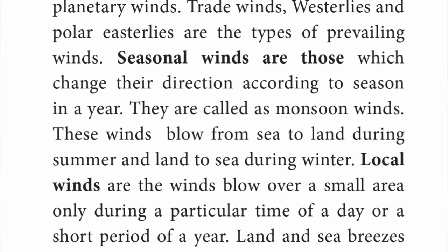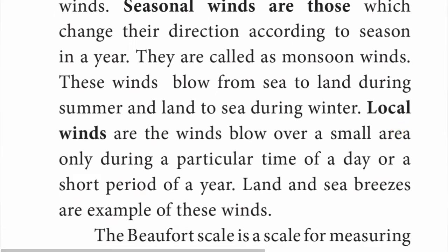Seasonal winds are called monsoon winds. These winds blow from sea to land during summer and from land to sea during winter. Local winds are winds that blow over a small area only during a particular time of day or a short period of the year, such as land breeze and sea breeze.